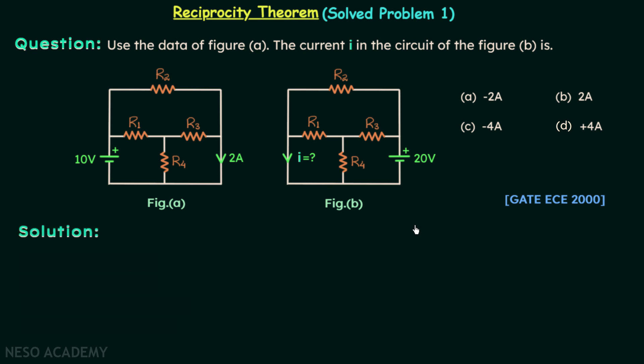Let us move on to the solution of this problem. When you observe the given networks you will find they have the same set of resistors in the exact same position.